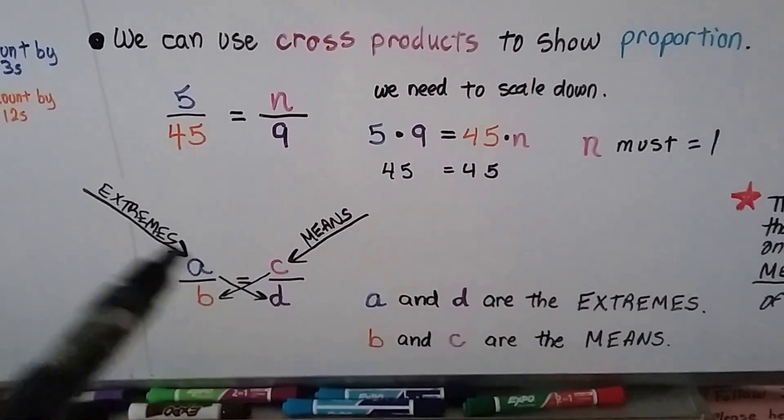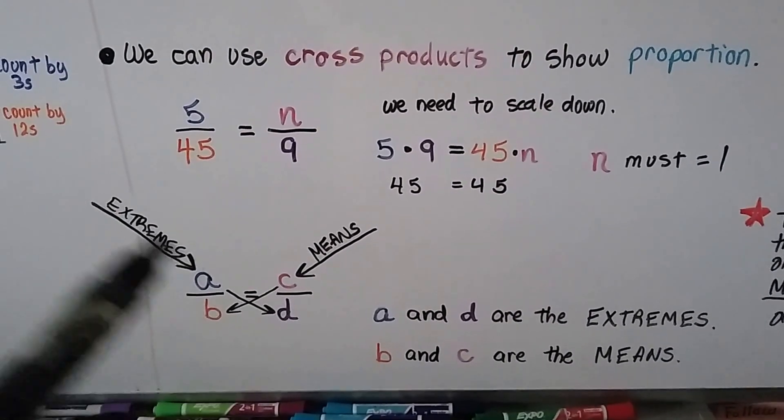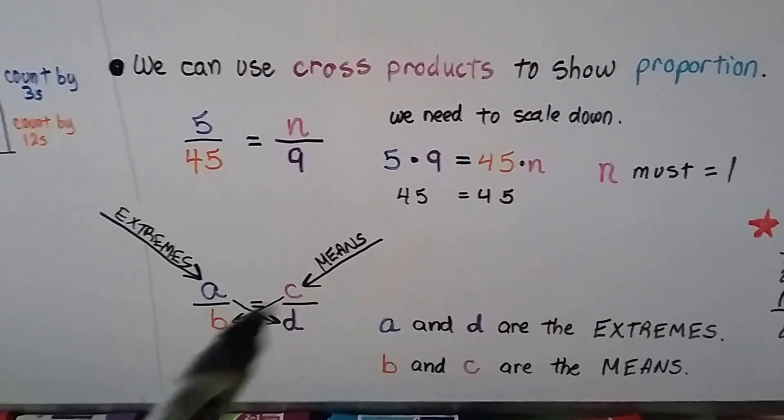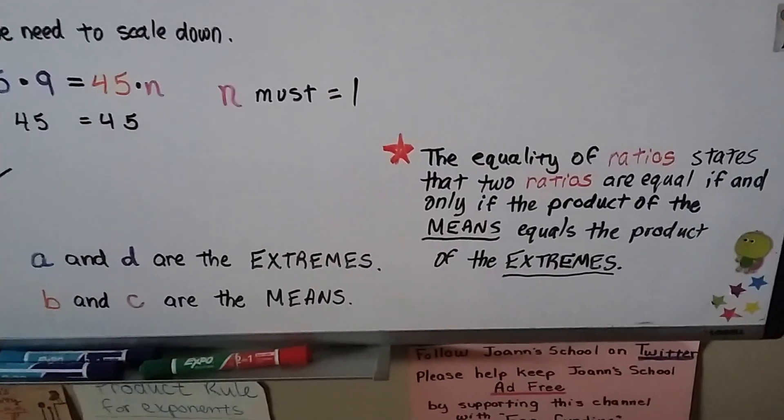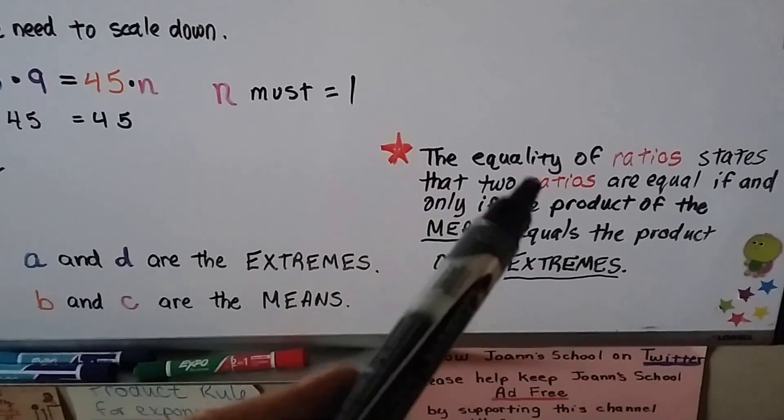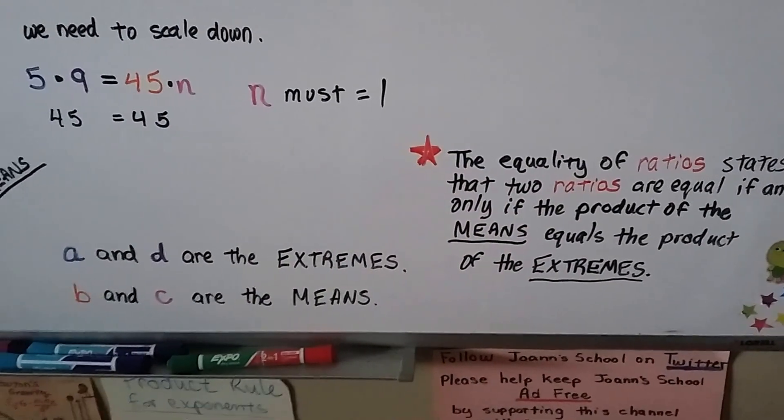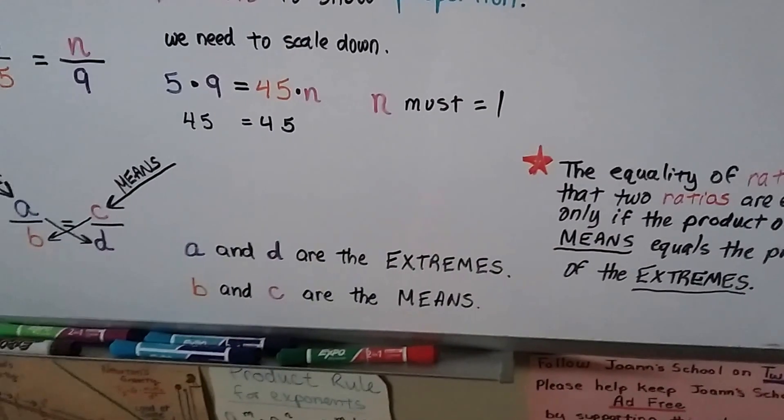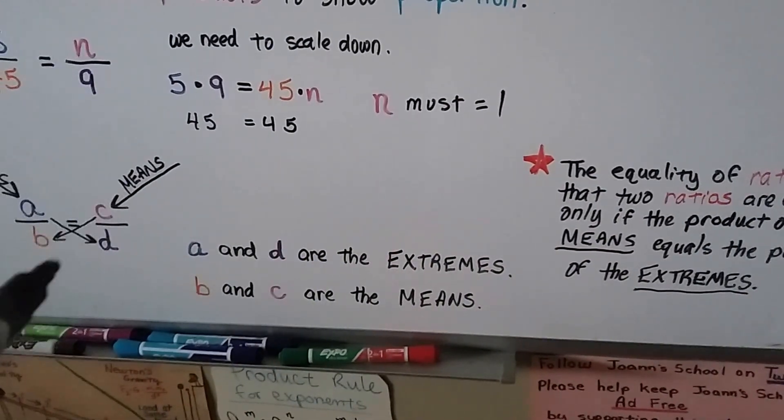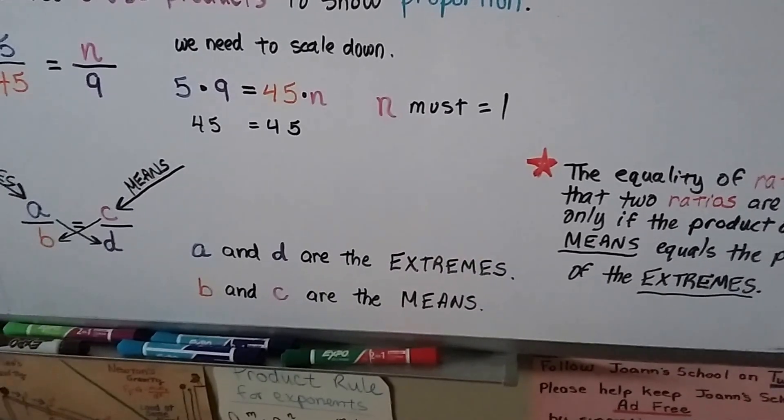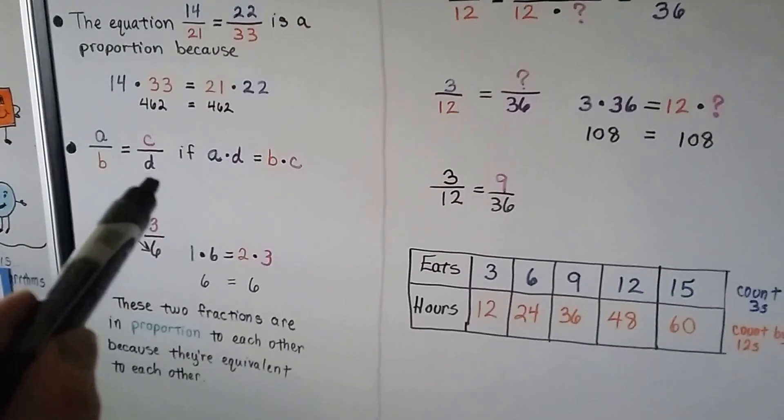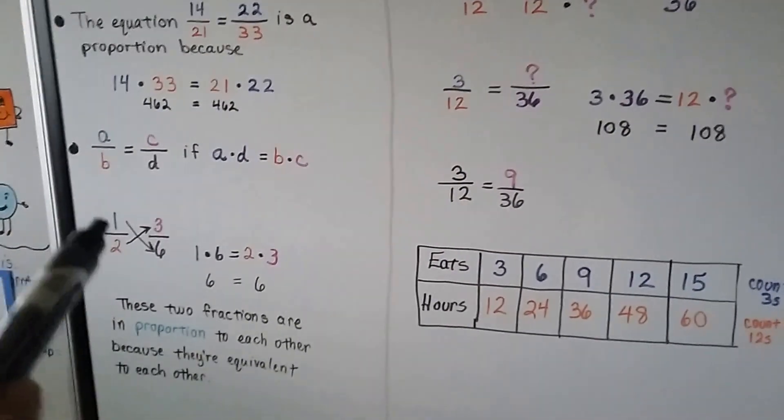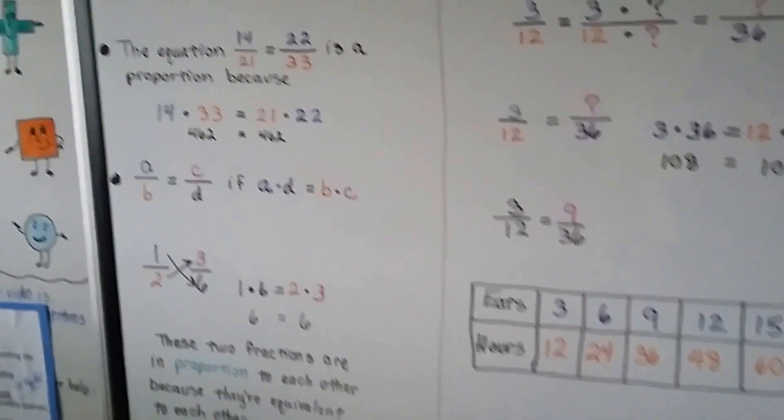A and D, these values here are called the extremes, and B and C are called the means. The equality of ratio states that two ratios are equal if and only if the product of the means equals the product of the extremes. Just like we did over here, the extremes will equal the means.